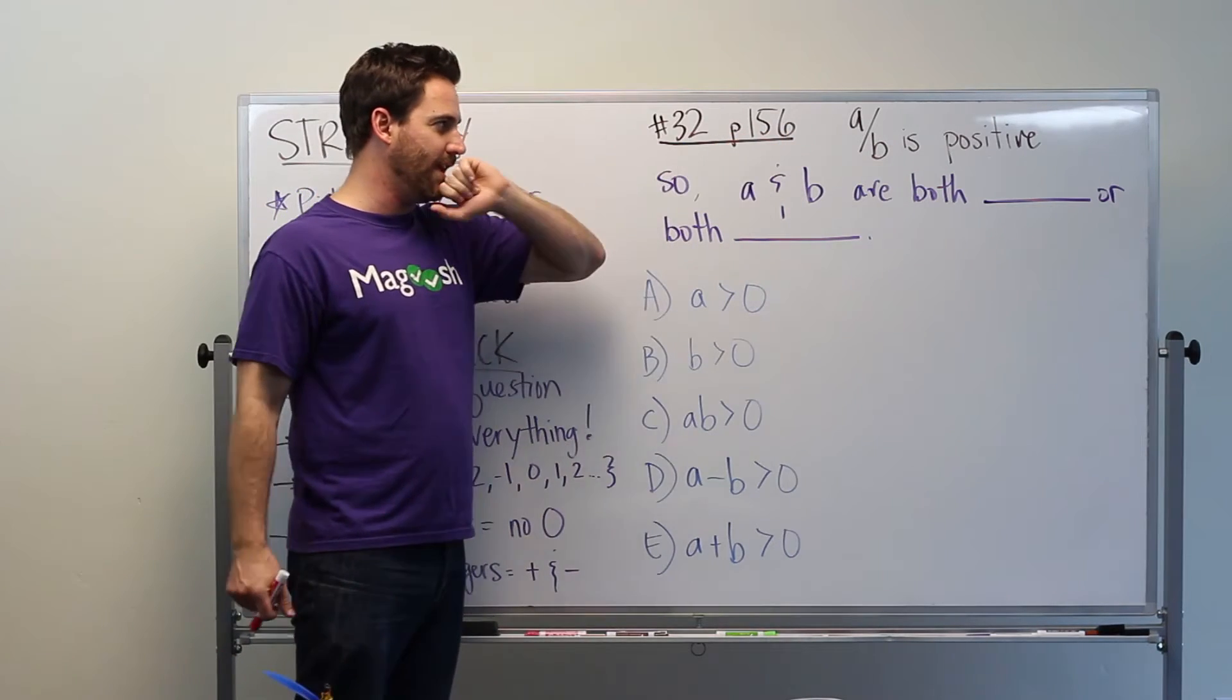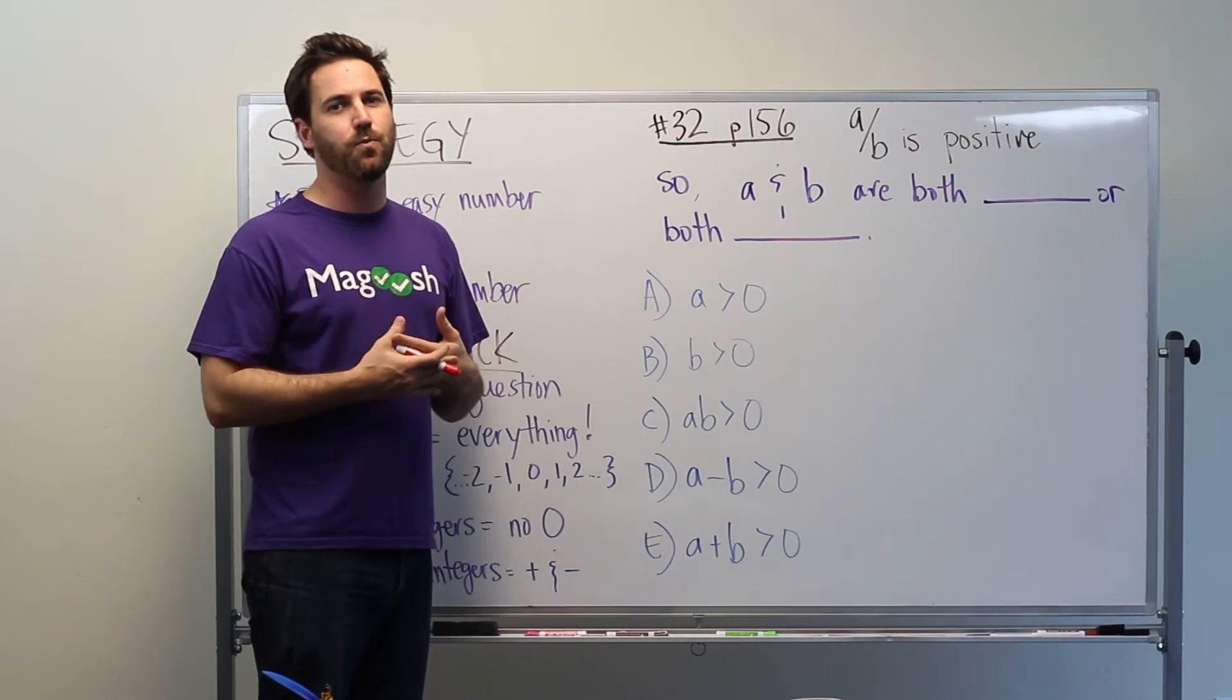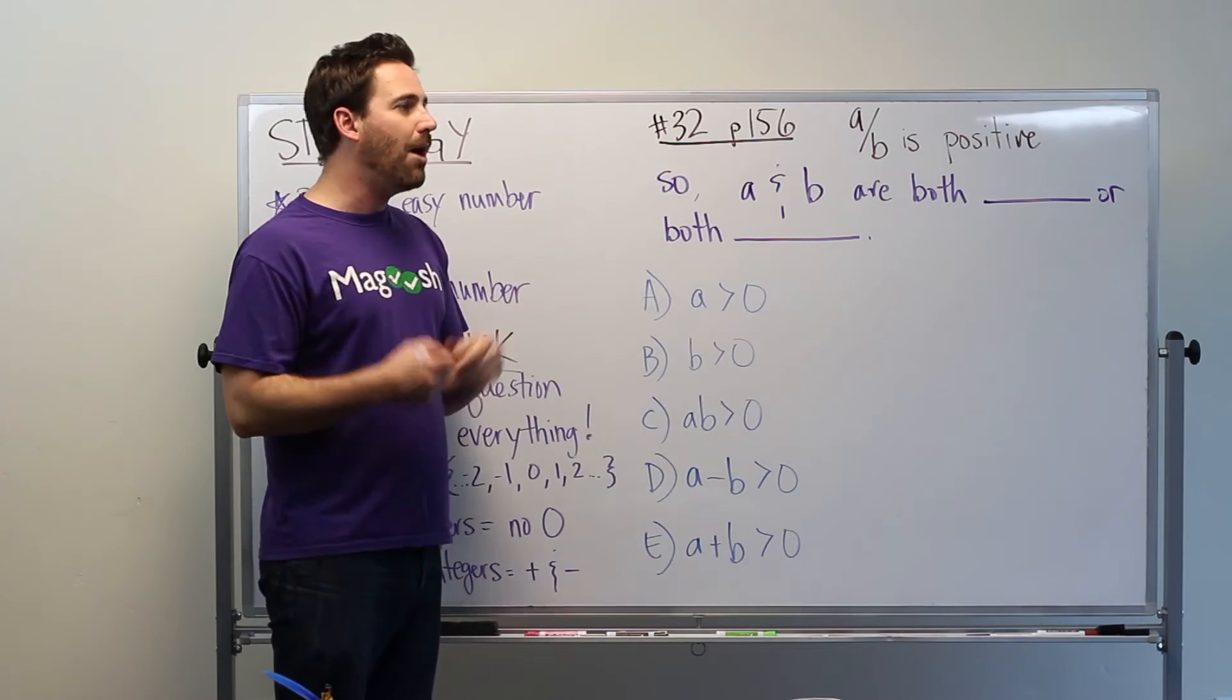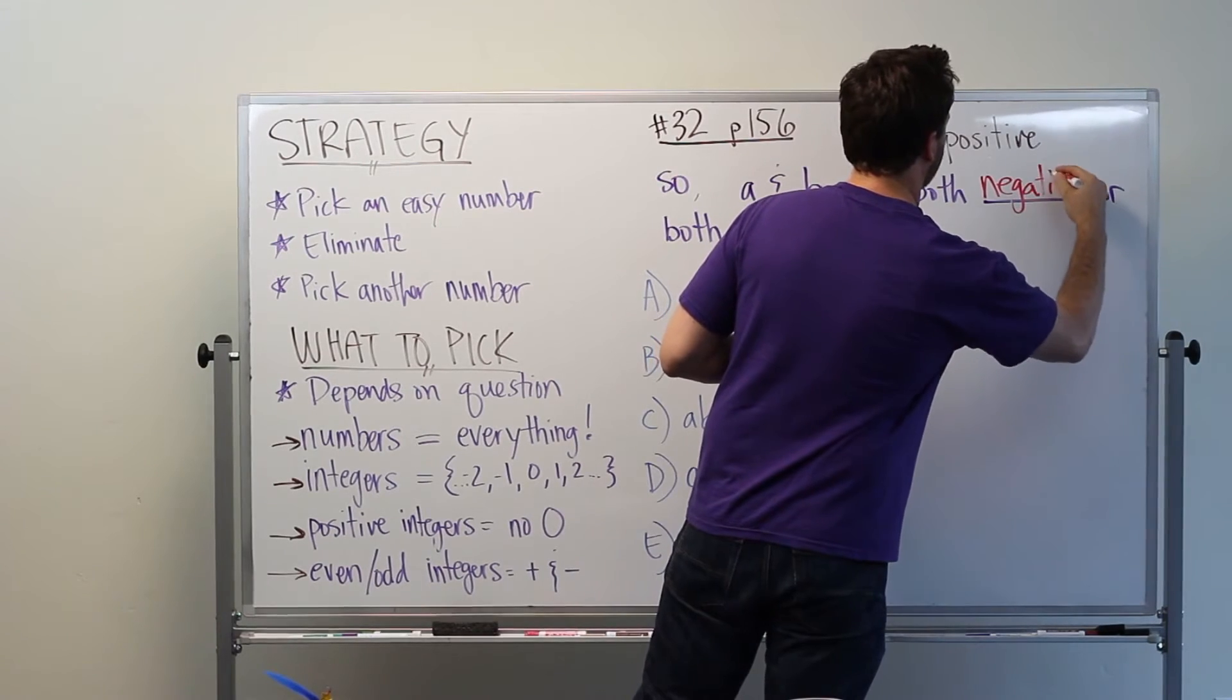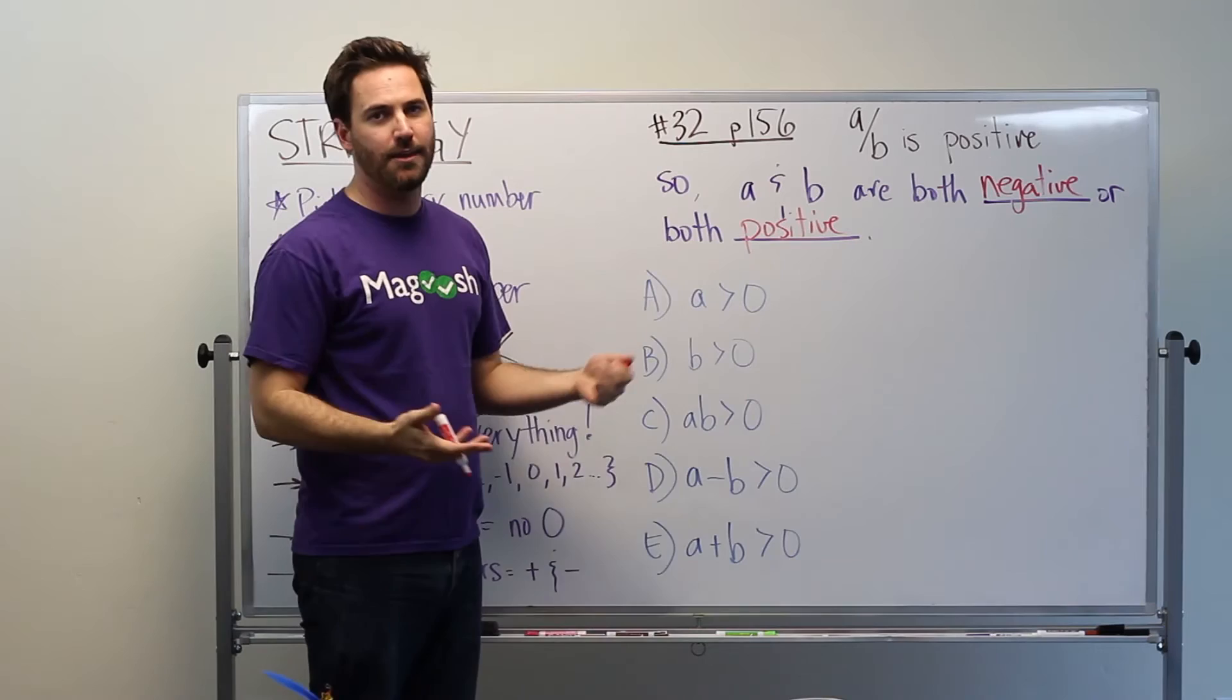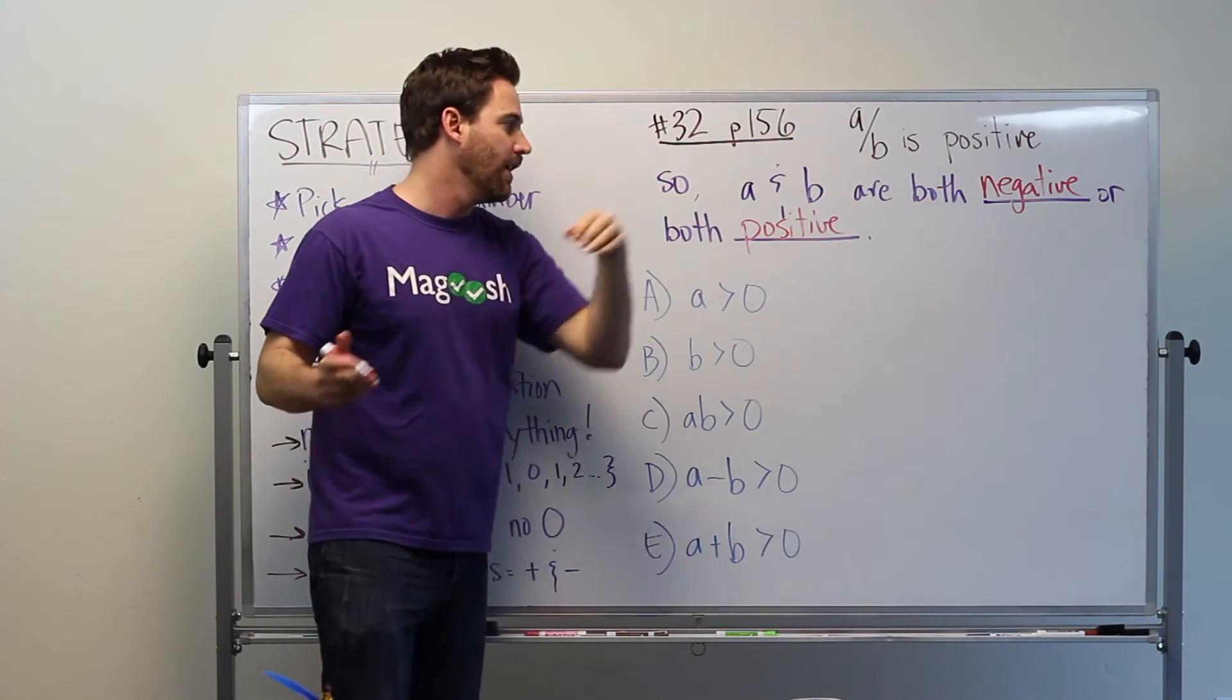We're given this information: A/B is positive. So at the very beginning you want to figure out what does this information tell us, because that's going to be our guide for picking a number. So if A over B is positive, A and B are both negative or both positive. In either of these situations you're going to end up with a quotient that is positive. So you'd have to have a negative number here and a negative number here, or positive and positive.